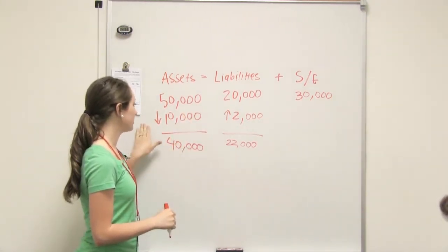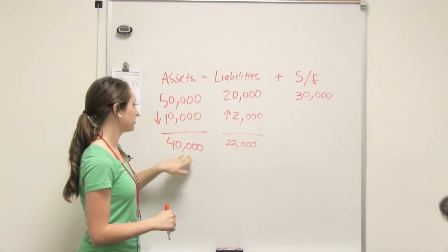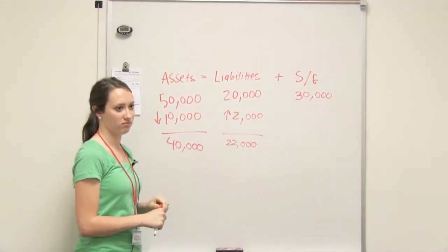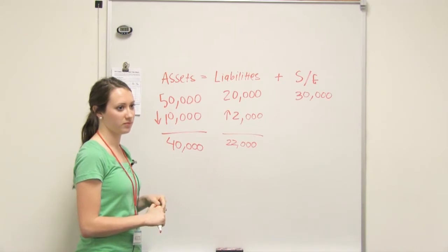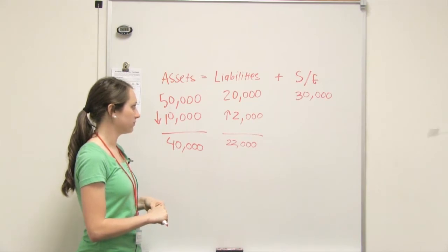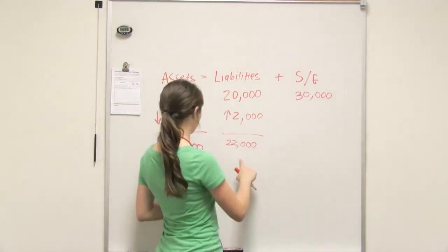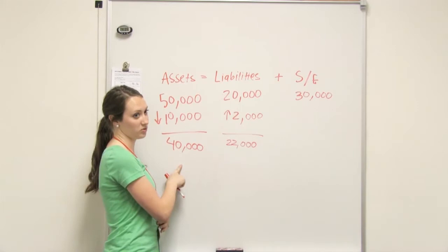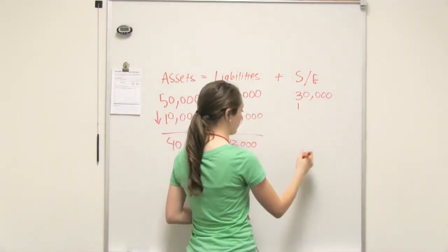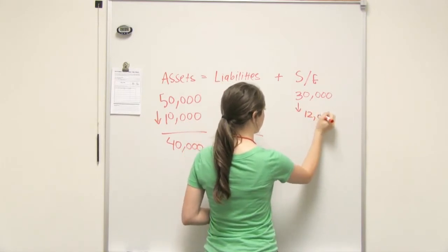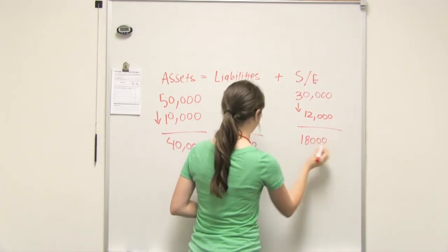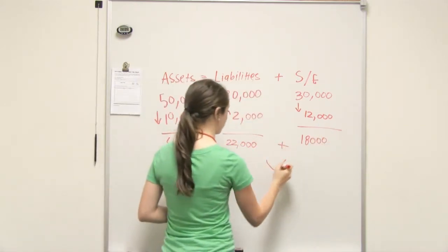Yeah, because if assets went down by this much and liabilities went up, yeah, you just have to get this side to equal. Okay. So we would be at $52,000, and then to get to $40,000, we'd have to, equity would have to go down $12,000 to equal $40,000. Yeah, it would have to go down $12,000, and then it would be at $18,000, right? Yeah.